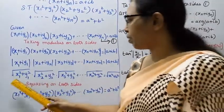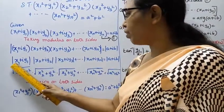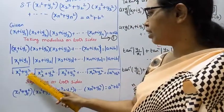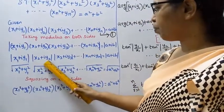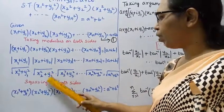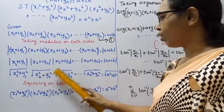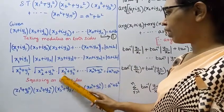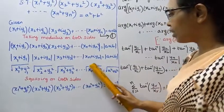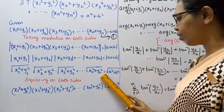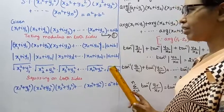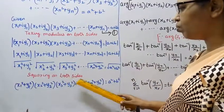Since it is modulus, we have to put the square root: square root of (x1² + y1²) into square root of (x2² + y2²) into square root of (x3² + y3²) etc., into square root of (xn² + yn²) = square root of (a² + b²). Easy sum. Now squaring on both sides.